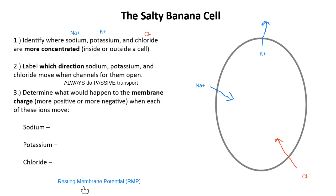There are two types of cells we need to know the resting membrane potential for. The first, from lesson nine, is muscle fibers — they were negative 90 millivolts. Neurons are different — what's the resting membrane potential for neurons? Neurons are not negative 90.